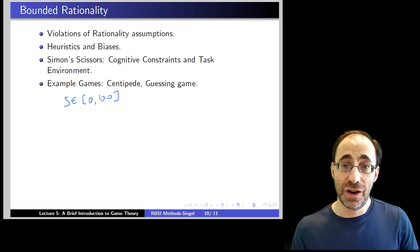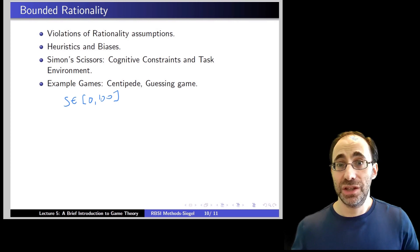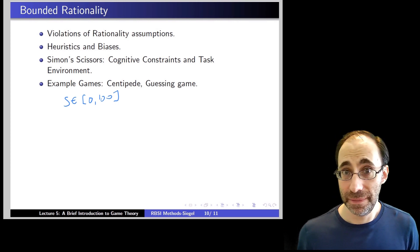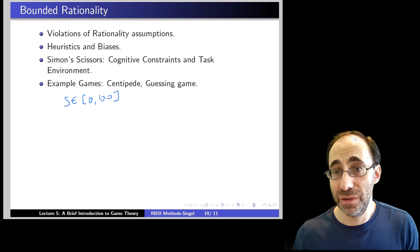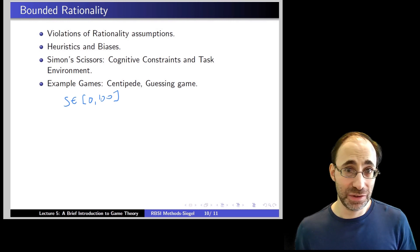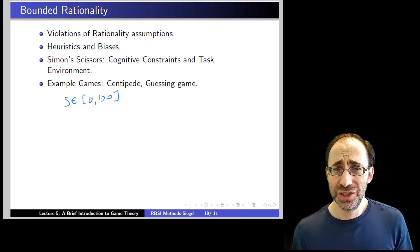So you can guess between 0 and 100 and the game works like this. All the people who guess, we average all their guesses, we take two thirds of that number, and whoever has a guess close to the two thirds of the average of everyone wins the prize and we assume you want the prize.